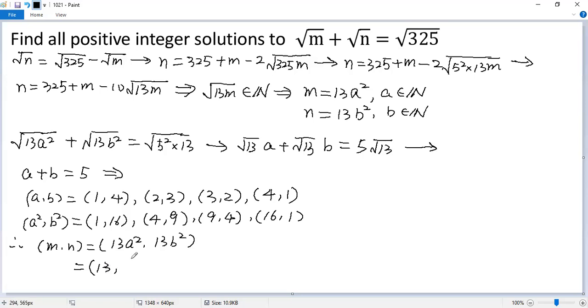13 times 1, 13. 13 times 16 would be 208. 13 times 4, 52. 13 times 9, 117. So that would be 117.